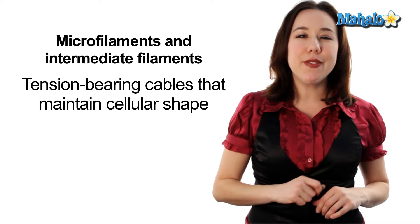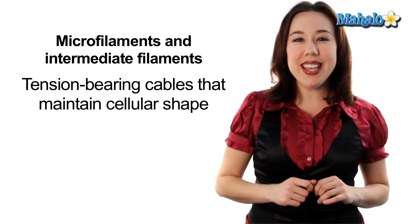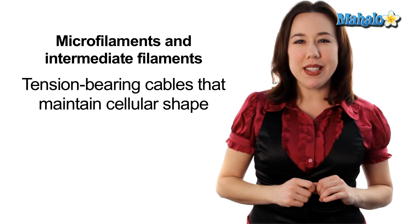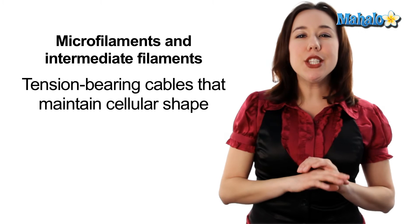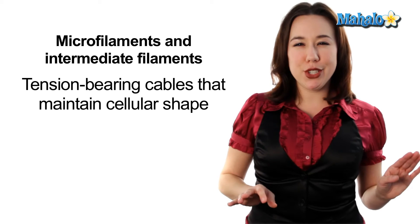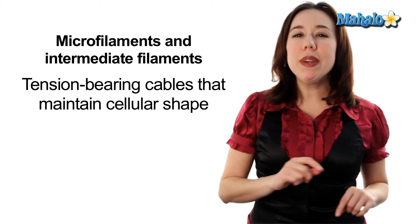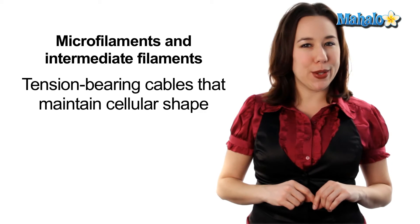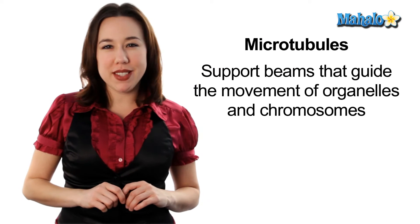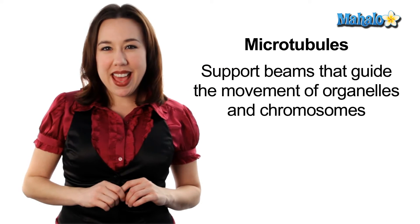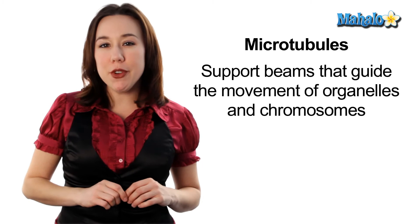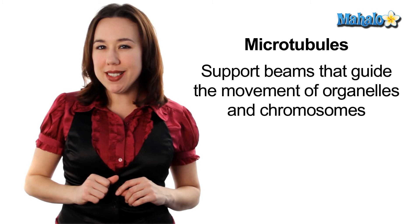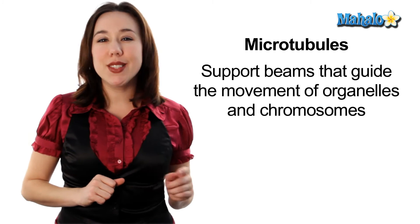Microfilaments, the thinnest of the three, and intermediate filaments are like tension-bearing cables stretching across the cytoplasm helping to maintain cellular shape. Our third type is microtubules. These are straight, hollow support beams of the cell and they help guide the movement of organelles as well as chromosomes.